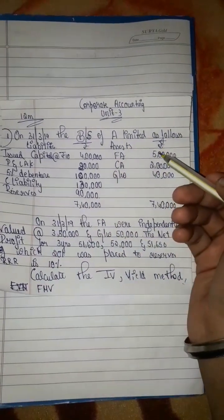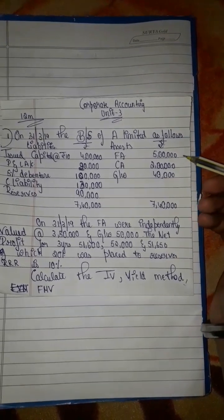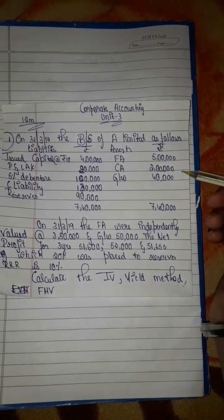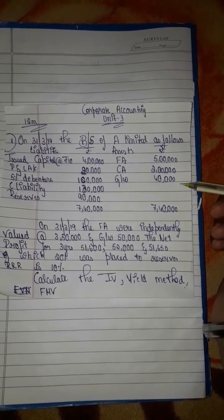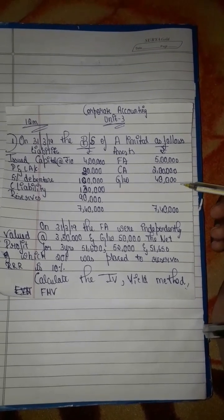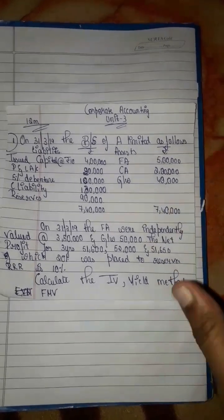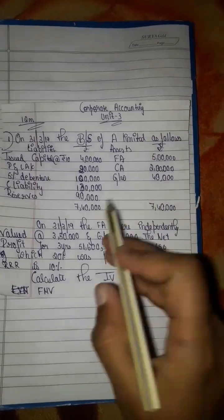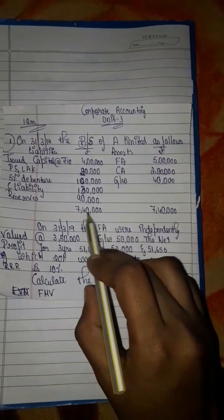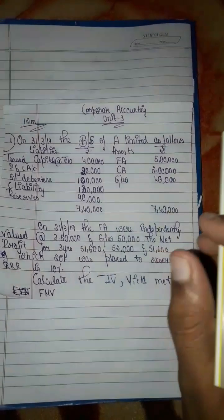On the assets side: fixed assets 5 lakhs; current assets 2 lakhs; goodwill 40,000. The total of the balance sheet is 7 lakh 40,000 rupees.